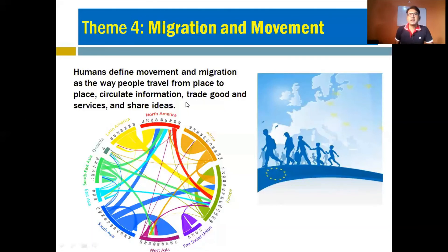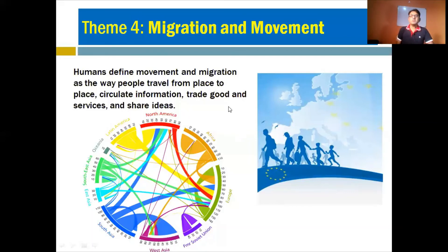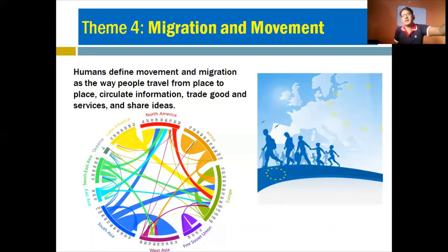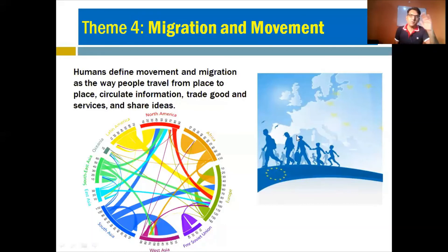Not only are people migrating from one place to another, but goods and trading services are also being transported, and ideas are being shared. People have different mindsets and ideologies — communism, capitalism, democracy, theology, or kingship — and these ideologies have nothing to do with borders. People in Pakistan or India can collaborate with people in America or Africa who share similar ideologies. These ideologies are also transmitted and moved from one region to another, forming a network of movements and migration.